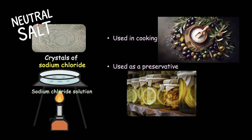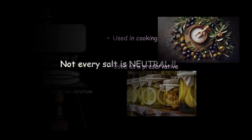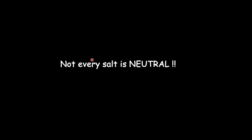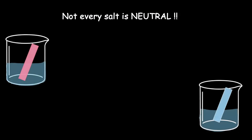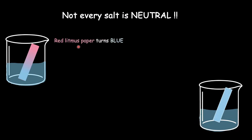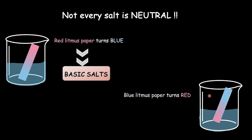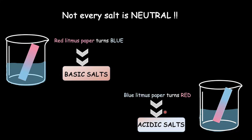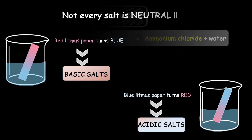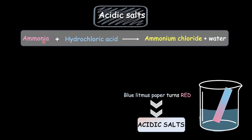But wait — not every salt you see around is neutral. Some salts make red litmus paper turn blue, and these salts are called basic salts. On the other hand, salts or salt solutions that turn blue litmus paper red are called acidic salts. For example, when a base like ammonia reacts with an acid like hydrochloric acid, the resulting ammonium chloride salt is acidic.